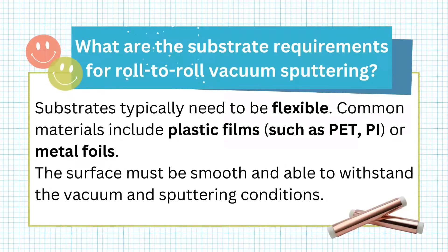What are the substrate requirements for roll-to-roll vacuum sputtering? Substrates typically need to be flexible. Common materials include plastic films such as PET, PI, or metal foils. The surface must be smooth and able to withstand the vacuum and sputtering conditions.